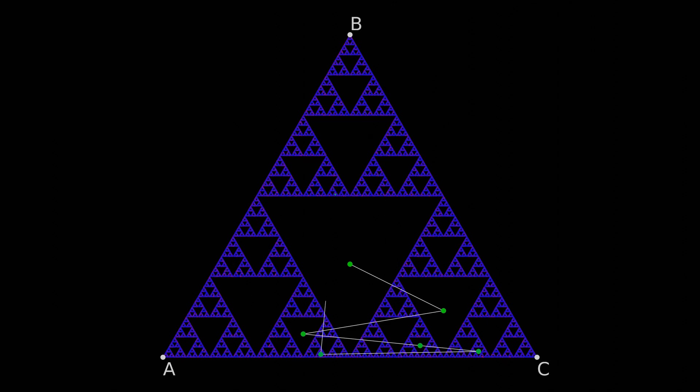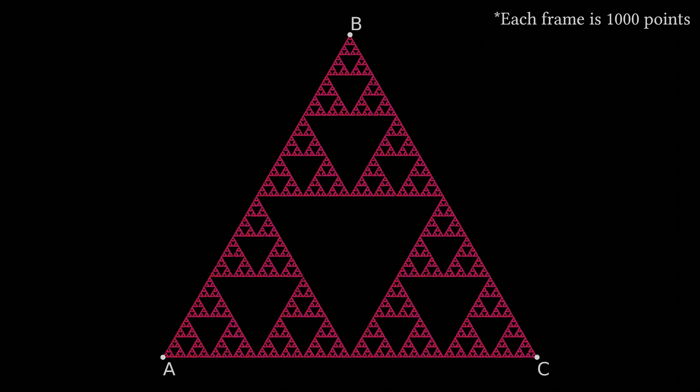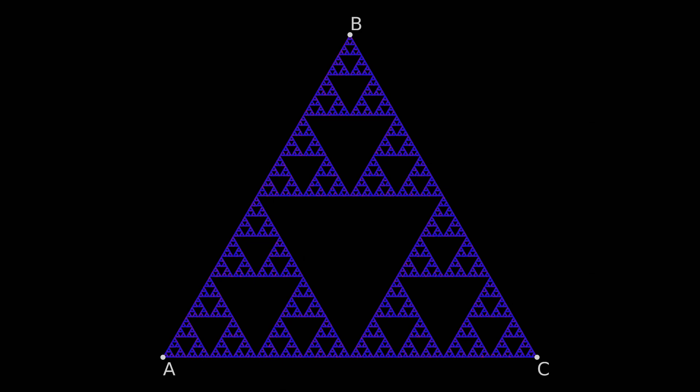Now, if we ignore the first 20 points or so of the simulation and then run it for thousands of iterations, this random sampling method will eventually redraw the Sierpinski triangle like before.